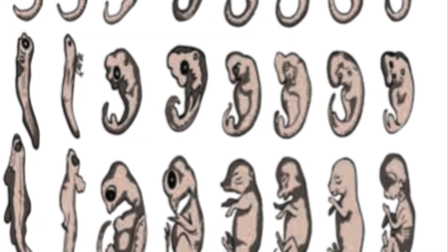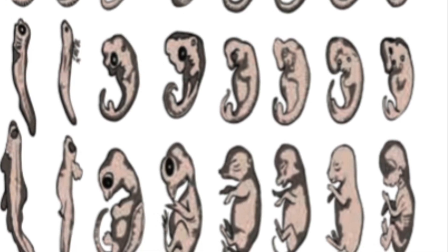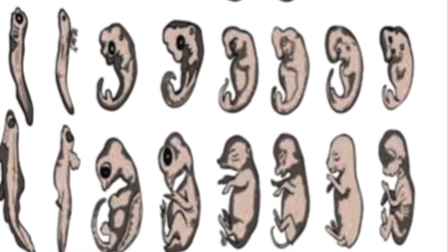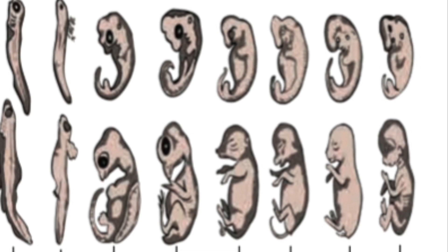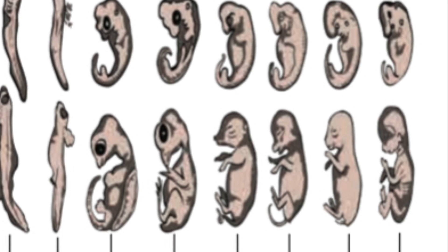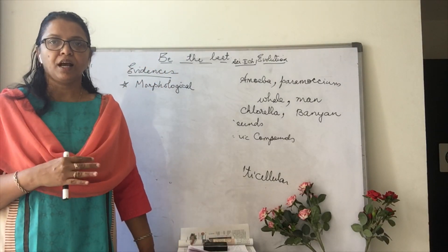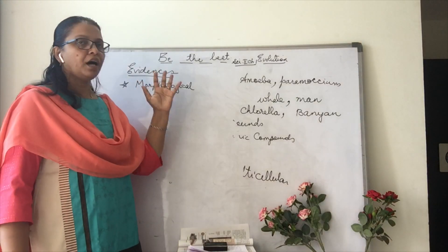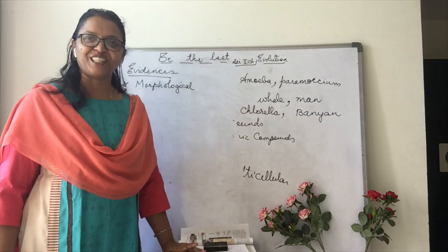Let's see embryological evidence. The comparative study of embryonic development of various vertebrates shows that all embryos show extreme similarities during initial stages, and those similarities decrease gradually. Today we have discussed about evolution, how evolution took place, and the different types of evidences for it. Thank you for watching.